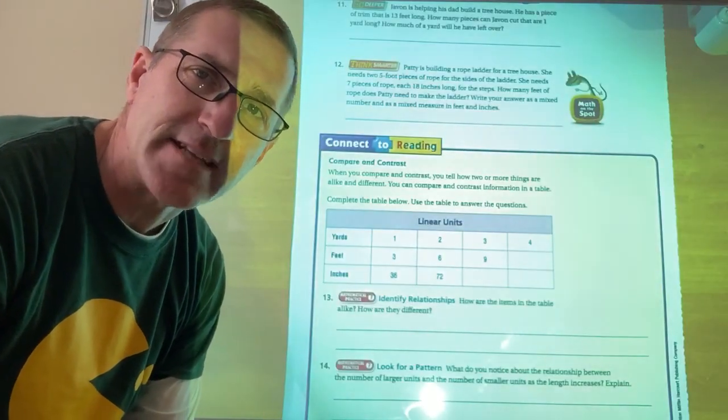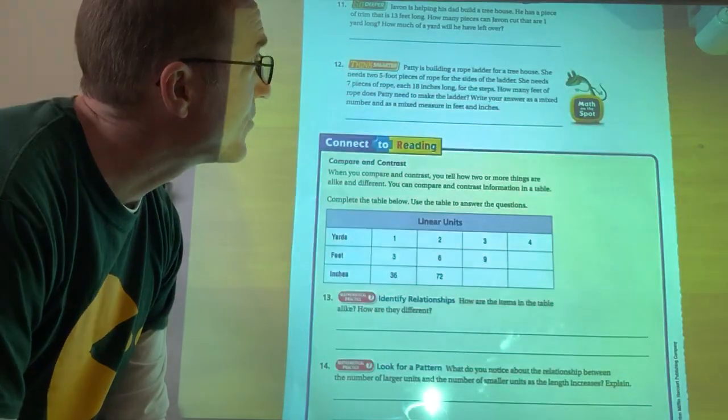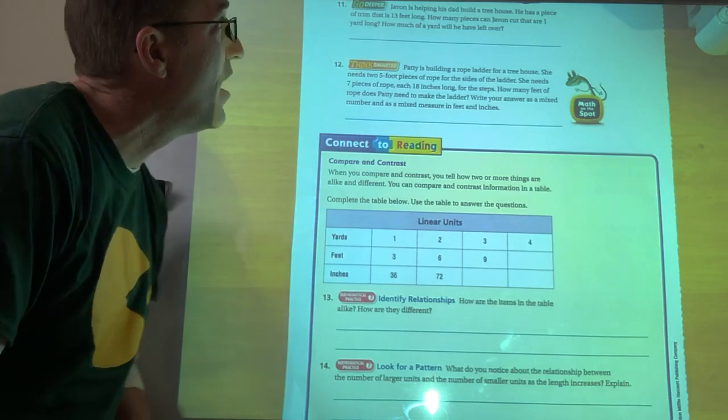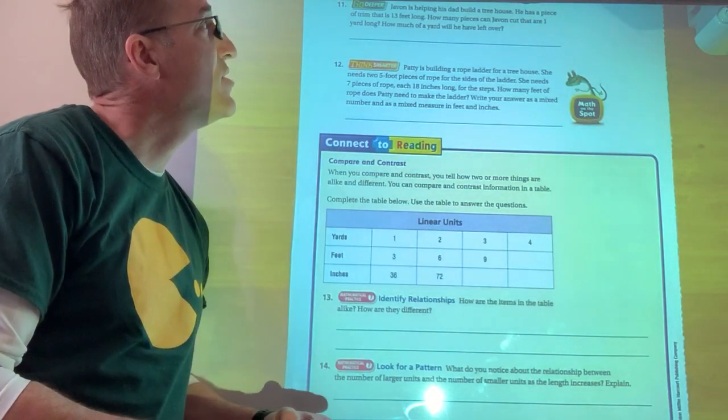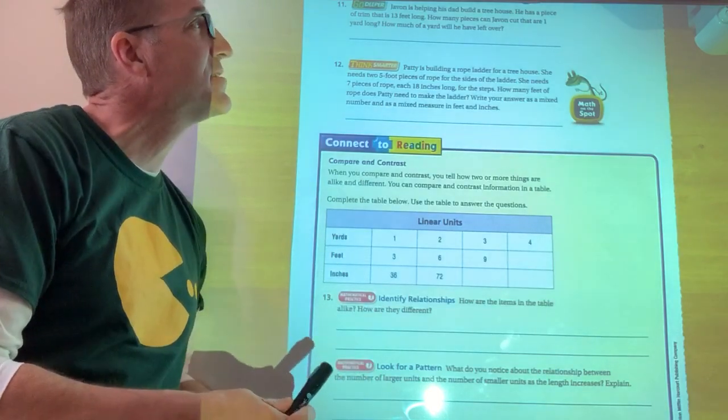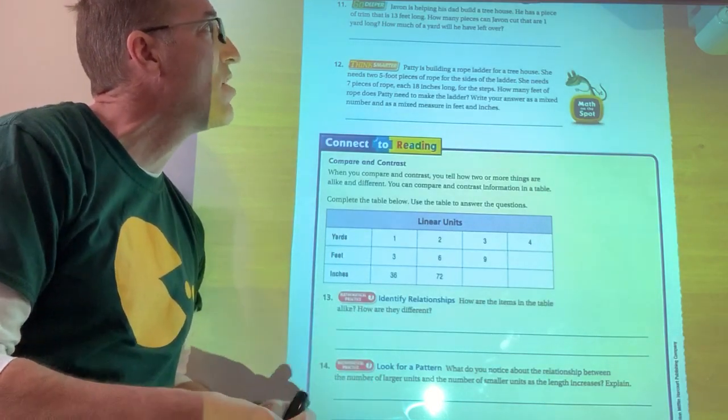Alright, we're back. We made it. It's the last page. So let's take a look here. We've got Javon is helping his dad build a tree house. He has a piece of trim that is 13 feet long. How many pieces can Javon cut that are one yard long?